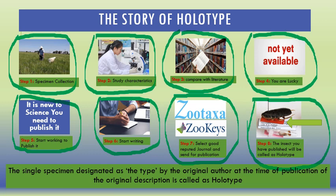To repeat the definition: the single specimen designated as the type by the original author — meaning you — at the time of publication when you published the original description, is called the holotype. Remember, the holotype always has a red color tag so that it can be identified and distinguished from the several specimens within the museum.